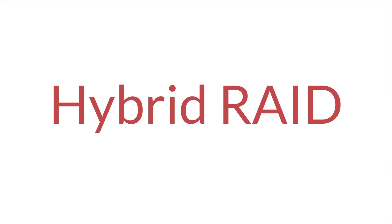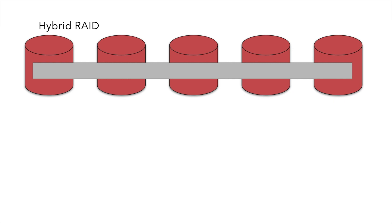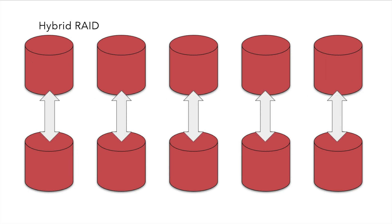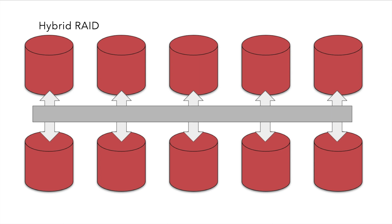Once you understand the basic RAID constructs, you can understand hybrid RAID. The most common hybrid RAID combines mirroring (RAID 1) with striping (RAID 0) to give us RAID 0+1 and RAID 1+0. RAID 0+1 adds mirroring to a striped volume — it takes one RAID 0 volume and mirrors it to another RAID 0 volume. RAID 1+0 stripes data across mirrored volumes. Both give us the benefits of RAID 0 (performance) and RAID 1 (protection from disk failures). There are also advanced RAID models like RAID 5+0 and RAID 6+0, which stripe data across multiple RAID 5 or RAID 6 volumes.